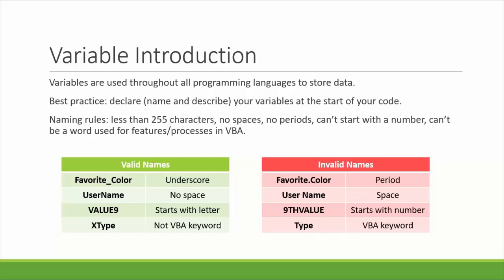There are also a few rules to keep in mind when naming your variables. First, the name can't exceed 255 characters, which should never happen anyways. Typically, you want your variable name to be clear and concise. Second, you can't include any spaces or periods in your variable names. Spaces and periods are identifiers that VBA uses to either separate words into separate actions or to move a step deeper into the action you are describing. Your names also can't start with a number and can't be a word that VBA already has an action or feature assigned to.